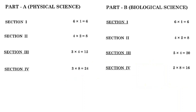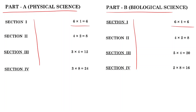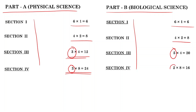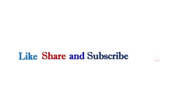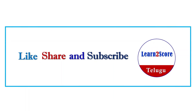Overall structure: Both Part A and Part B have 4 sections. Section 1 has 1-mark questions, Section 2 has 2-mark questions with 4 questions each, Section 3 has 4-mark questions (3 in physical sciences, 5 in biological sciences). Section 4 has internal choice with 8-mark questions (3 questions in physical sciences, 2 in biological sciences). Each part is for 50 marks, total 100 marks. All the best for your examination — prepare well!